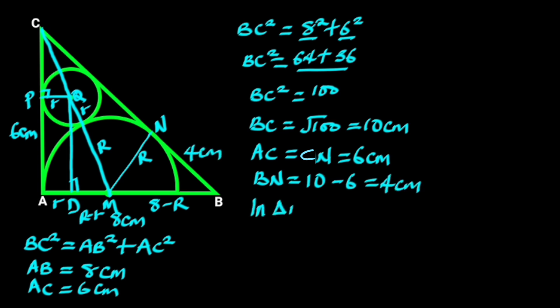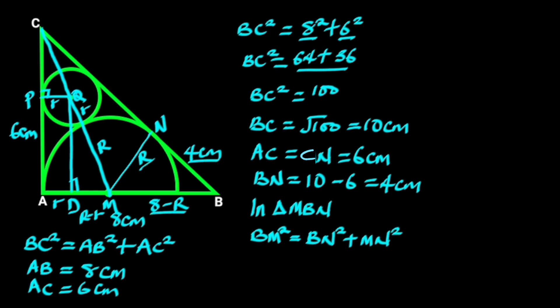In triangle MBN, we will apply Pythagoras' theorem to find the radius of the semicircle, uppercase R. It follows that BM² equals BN² plus MN². BM is 8 minus r, BN is 4, and MN is r. Substituting these values gives us (8 minus r)² equals 4² plus r².